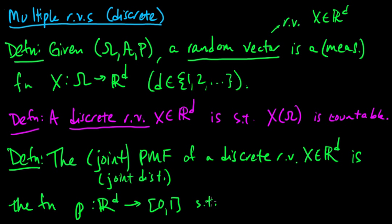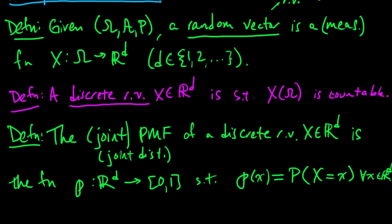defined by p of x equals the probability that X equals that value. So x here is for all x in R^d. So this is, x here is a vector, right, this is a function from vectors to numbers.